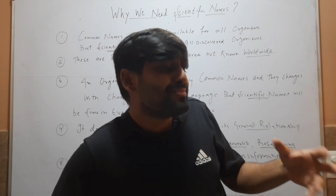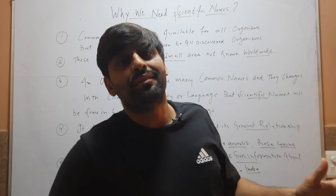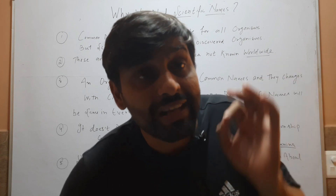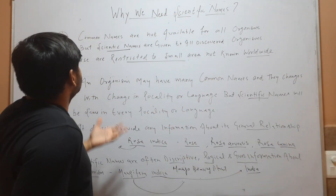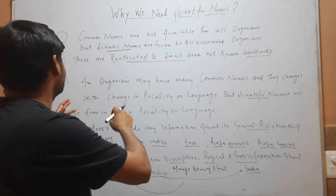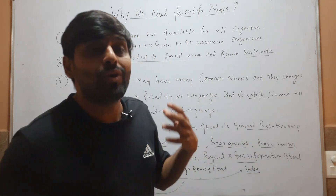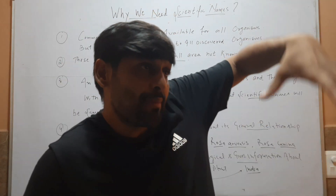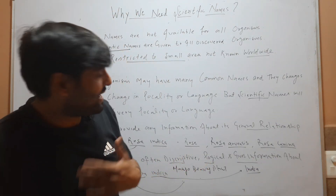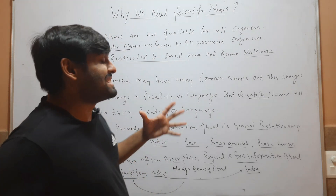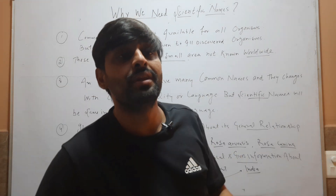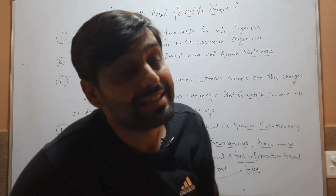So these are the reasons why we need scientific names. Scientific names are given to all plants, and in all localities and languages the name remains the same — the scientific name is known worldwide and does not change with any geographical area or language. It provides general relationship, and these names are descriptive, logical, and give information about the organism. That's why we need scientific names.